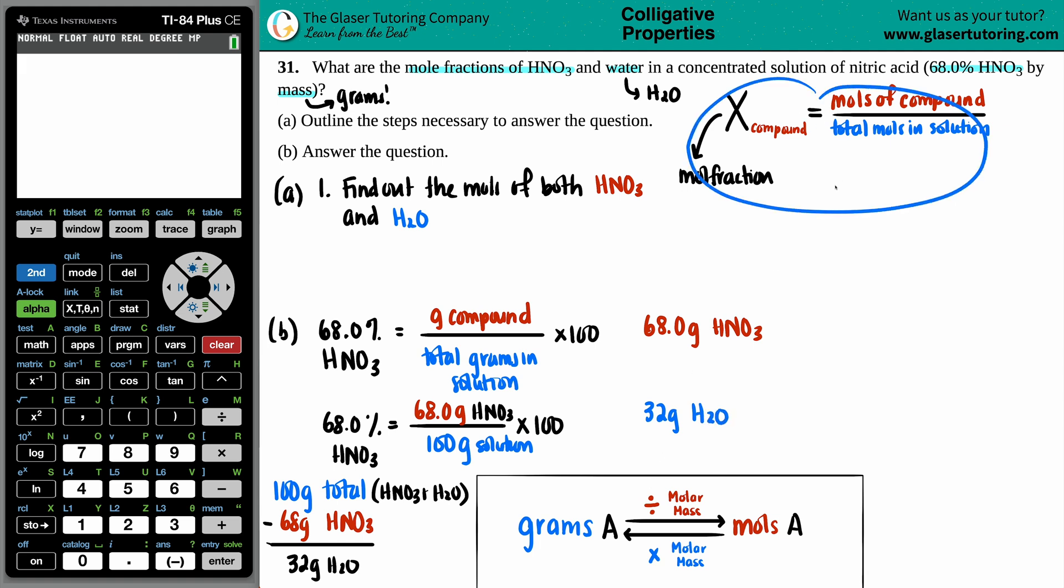Now we still want to find out that mole fraction, so I still need to find out the moles. Find out the moles of both HNO3 and H2O. So I want to go from grams of HNO3 and grams of H2O to moles of HNO3 and moles of H2O. How do I go from grams to moles? That's back to basics. Grams of one thing, I just label it as A, to moles of another thing, we're going this way, all you have to do is just divide by the molar mass.